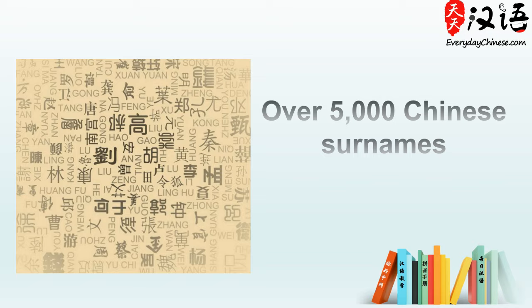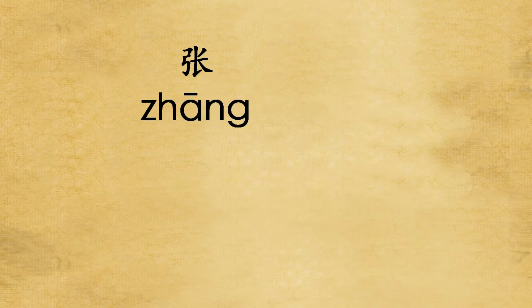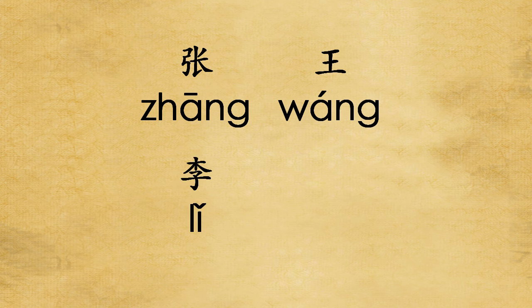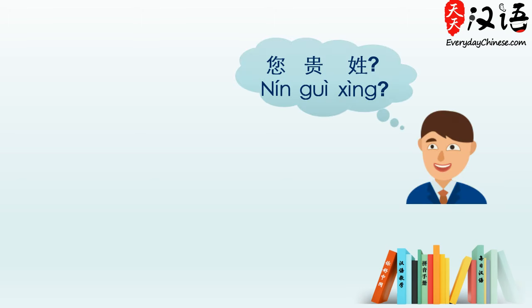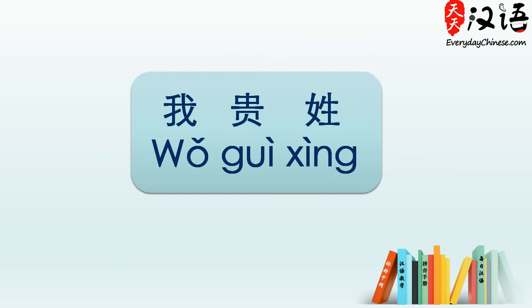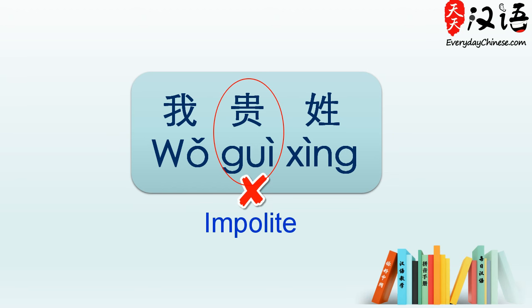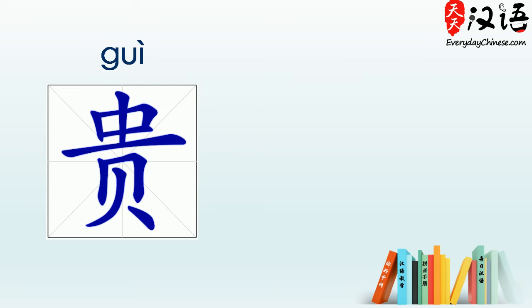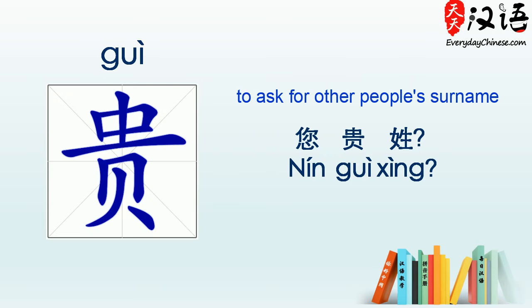The most common ones are 张, 王, 李, and 赵. If people ask you 您贵姓, can you answer with 我贵姓 plus your surname? The answer is no. You can never use 我贵姓 to introduce your surname — it doesn't sound humble in Chinese culture. You can only use 贵 to ask for other people's surnames.